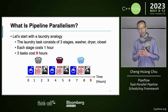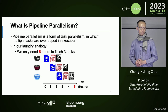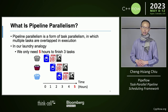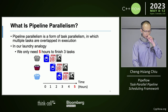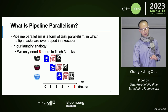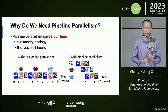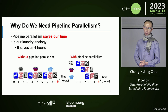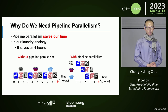Is there any way we can overlap the tasks instead of doing the laundry in a serial manner? Yes, and that is pipeline parallelism. It's a form of task parallelism in which multiple tasks are overlapped in execution. In our laundry analogy, if task one is at the closet, task two is at the dryer, and task three is at the washer, then we only need five hours to finish three tasks instead of nine. Simply put, pipeline parallelism saves us four hours.